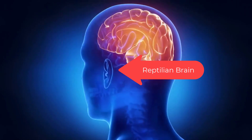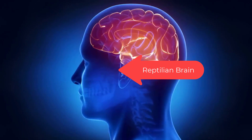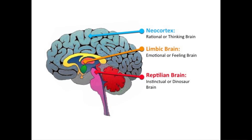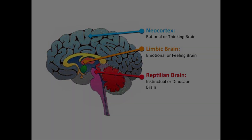The old brain, the reptilian brain — it decides. It can take into account input from the other brains, but it can also decide faster than the blink of an eye, then use the other brains to justify the decision. The reptilian brain is visual and hardwired into the brain stem.